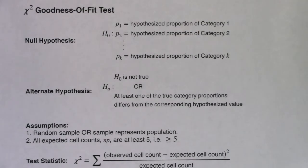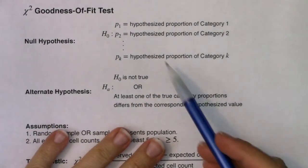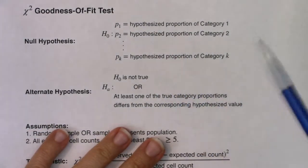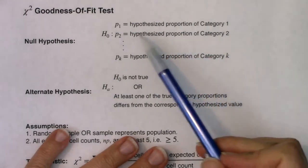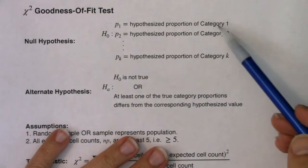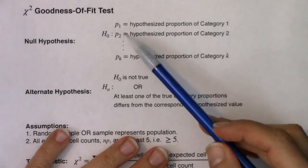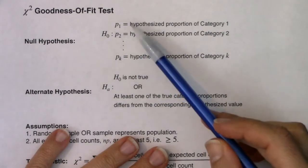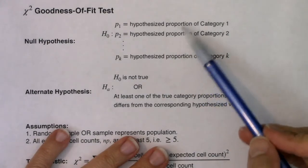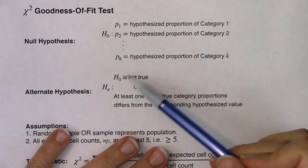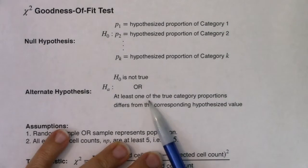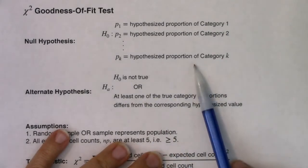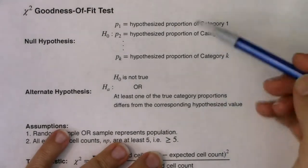Let's look at the rules that are going to govern us while we're in this chapter running this particular hypothesis test. For your null, you can have quite a few proportions you need to define. It depends on how many categories you have from your one categorical variable. In the previous example when we did type of nut, we had four categories. You'll tell me what those null proportions will be equal to, and sometimes they're all equal to each other. For the alternate, at least one of the proportions differs from the hypothesized value — at least one of these proportions is incorrect in the null.